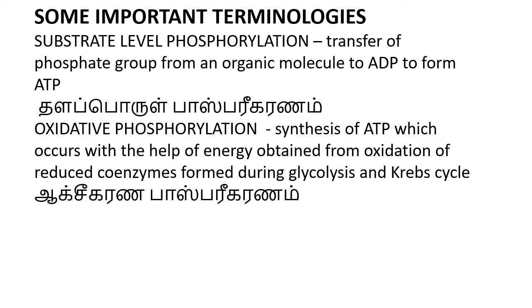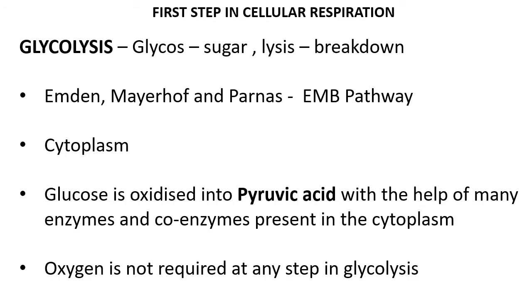These terminologies are very common in respiration. Glycolysis is the first step in cellular respiration. 'Glycos' means sugar, and 'lysis' means breakdown — so the sugar is broken down and the energy hidden in the sugar is released in the form of ATP. It can be any carbohydrate, protein, or fat — finally reduced to sugar — that breaks down to release energy. Glycolysis is also called the EMP pathway, or Embden–Meyerhof–Parnas pathway, and it occurs in the cytoplasm.